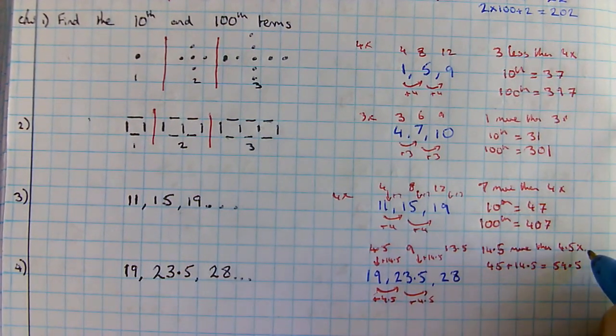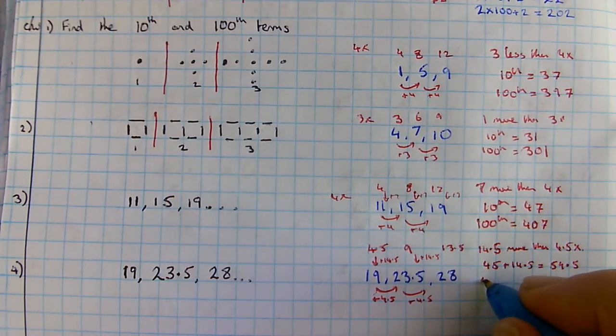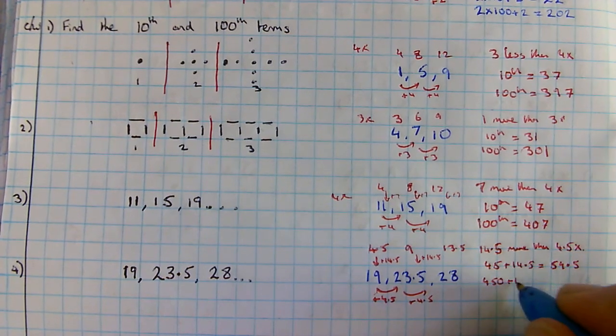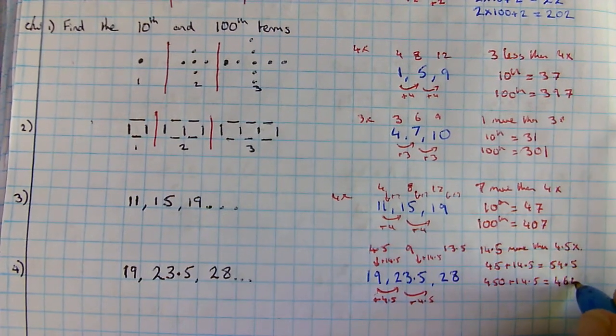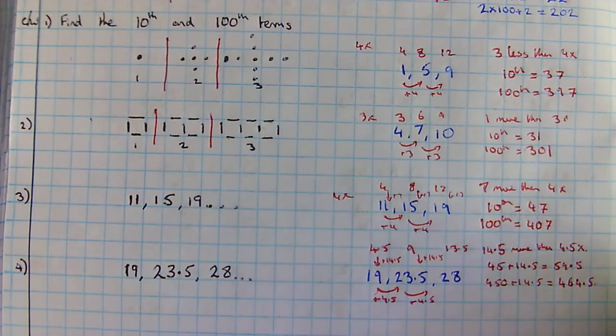4.5 times a hundred is four hundred and fifty. Plus 14.5 gives me four hundred and sixty-four point five. Well done.